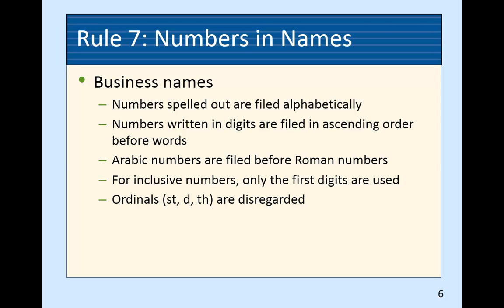What's an ordinal number? The example in the book shows 1ST, 2D, 5TH. Those alphabetical characters put after a number are called ordinals. 1st, 3rd, 5th — we ignore the ordinals and it becomes a number. So '1st Bank' or '1st Street' would all get filed under the number 1, provided they were written in digits.